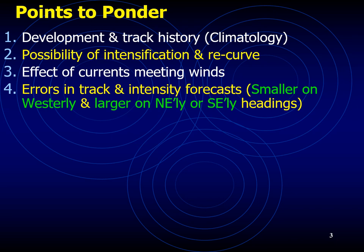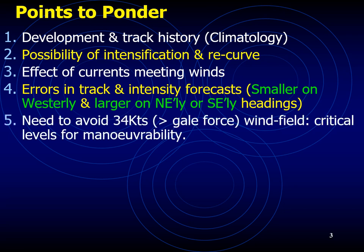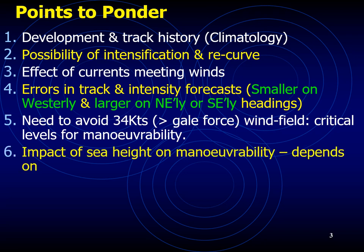Keep in mind the errors that occur in track and intensity forecasts — they are smaller on westerly tracks and larger on northeasterly and southeasterly headings. This means that even though you know the distance from the tropical storm and its intensity, you must always keep a safety margin to ensure your ship stays away from the TRS effects. Try to keep as much distance as possible. Avoid gale force winds, as they slow down your ship, lead to heavy weather, and can cause damage — ships have been known to break in two and sink.